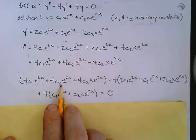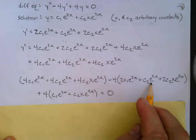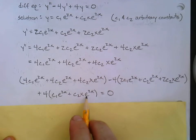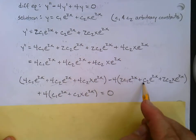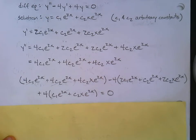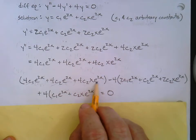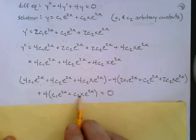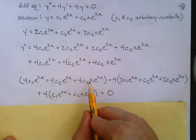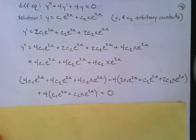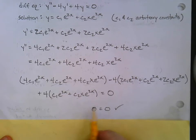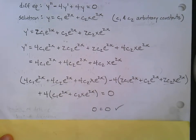Now the c2 e to the 2x terms: I have four of them, then I subtract four — those cancel out. Finally the c2 x e to the 2x terms: I have four of them, minus eight, plus another four — yes, those all cancel. We can say zero on the left and zero on the right. Zero equals zero — it's verified.